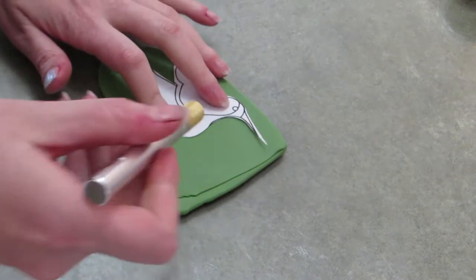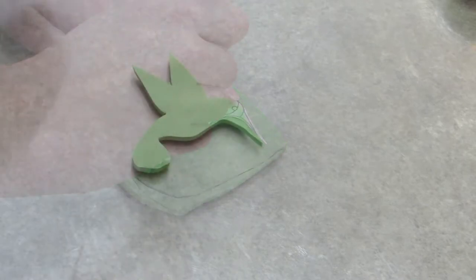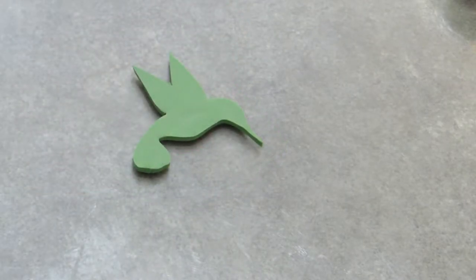All right, to get started, go to your computer and print out a template of a hummingbird. Just trace it out. I split the tail to give it a little more edge.